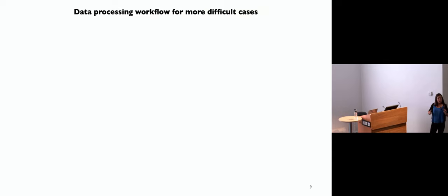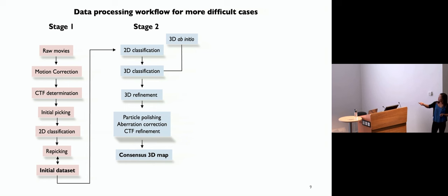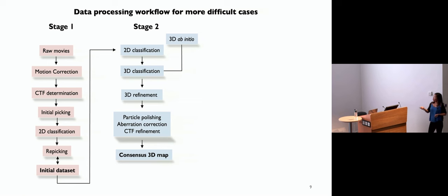For more difficult cases, the data processing workflow we often follow has several stages. The first stage is going from raw movies, doing all pre-processing and particle picking to get what I call the initial data set — this is where pretty much all downstream processing starts. The second stage uses this initial data set for 2D classification, 3D classification, and refinement. If sufficient resolution is achieved, you can use aberration corrections, which Shor talked about yesterday, and then you get the consensus 3D map. For many well-behaved cases, you can stop here and start writing up your paper.